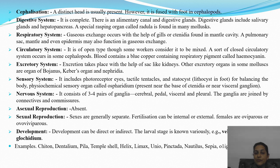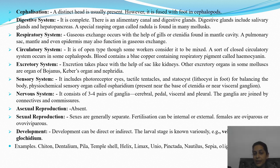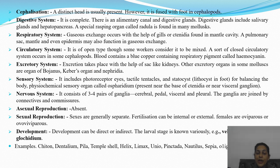Sensory system includes photoreceptor eyes, tactile tentacles, and statocysts for balancing the body. A physiochemical sensory organ called the osphadium is also present. Nervous system has three to four pairs of ganglia — cerebral (head), pedal (foot), visceral (internal organs), and pleural (associated with respiratory system). These ganglia are joined by connectives or commissures.